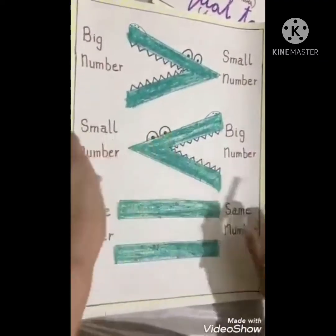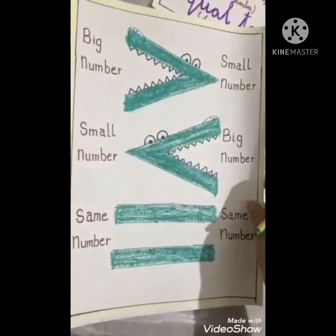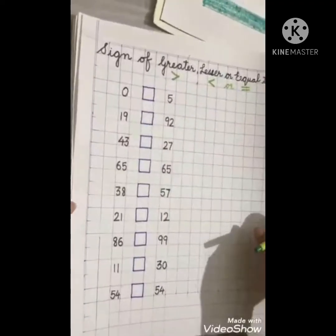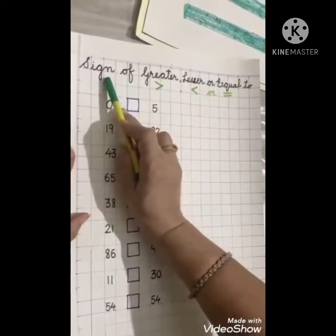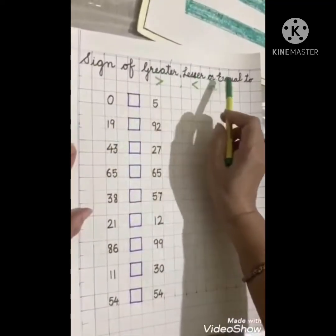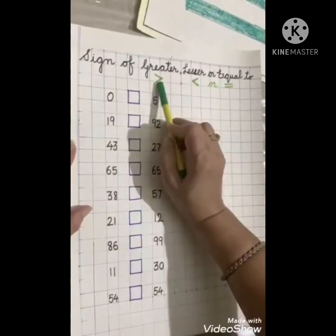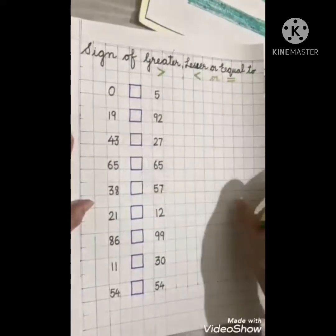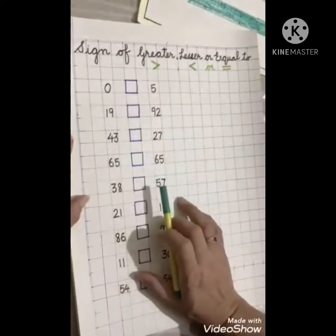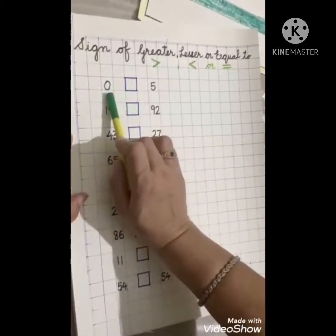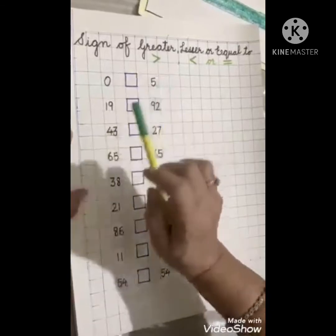With the help of these signs and the mouth of the alligator, we will be doing a practice assignment so you can easily understand the concept. Here is a sheet I have prepared for you: greater than, lesser than, or equal to. This sign is greater than, this is lesser than, and this is equal to. We have to compare the two given numbers.